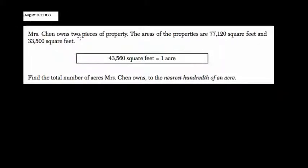In this problem, we're told that Mrs. Chen owns two pieces of property. The areas of the properties are 77,120 square feet and 33,500 square feet. Here they give you the conversion from square feet to acres: 43,560 square feet equals one acre.